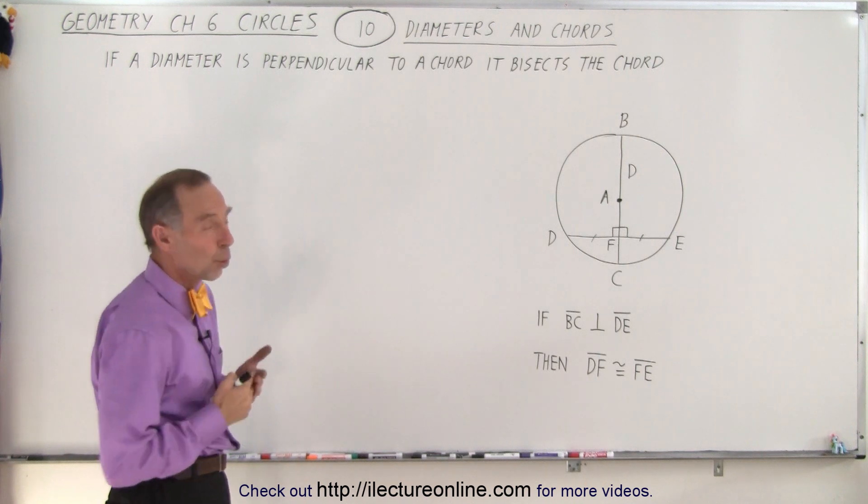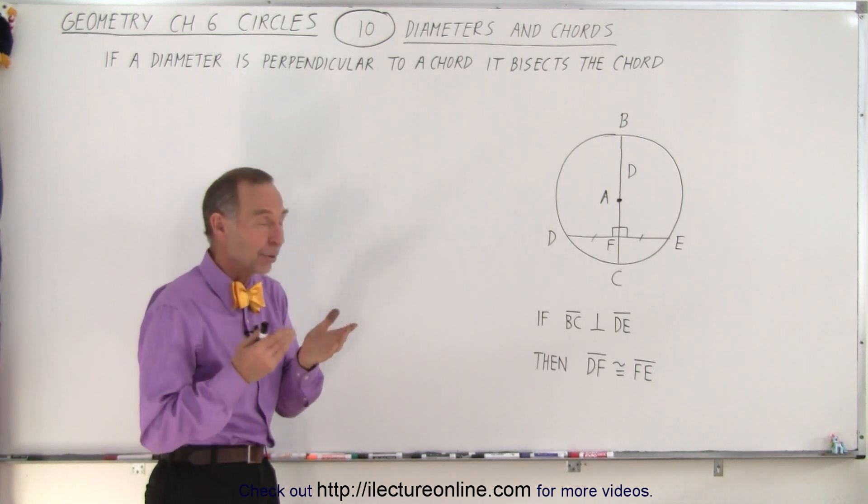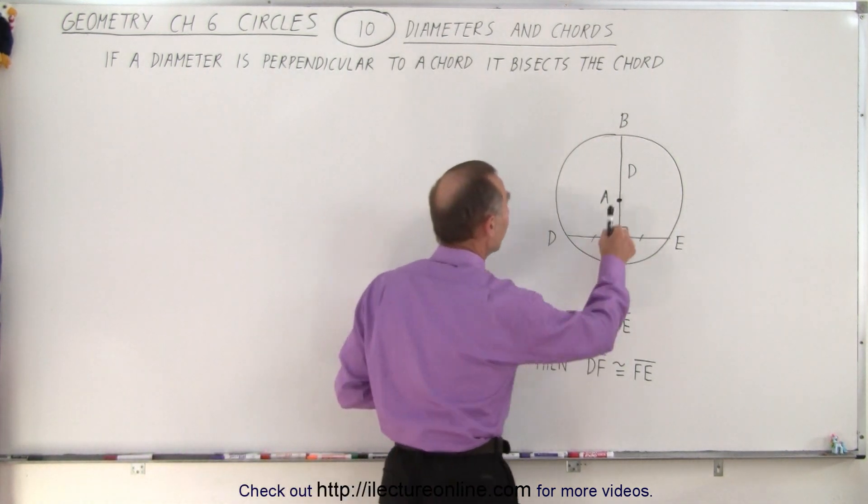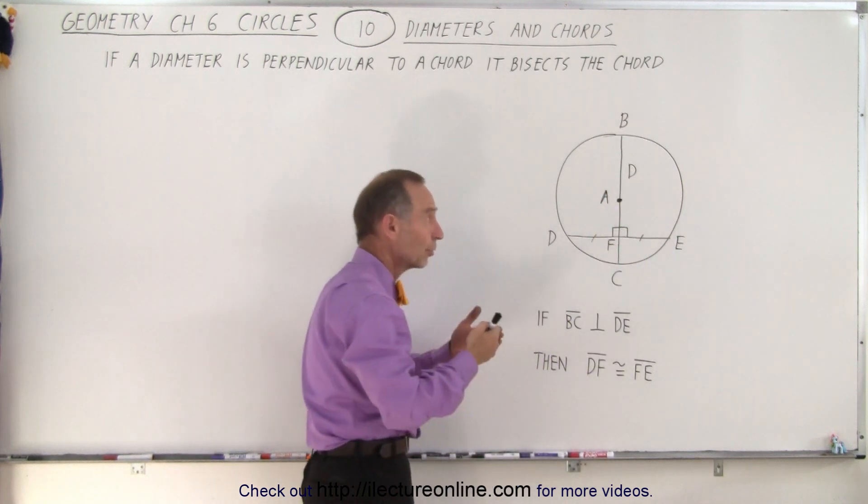We're dealing with diameters and chords. Remember what a diameter is - it is a chord that passes through the center of the circle, which means that it represents the full diameter of the whole circle.